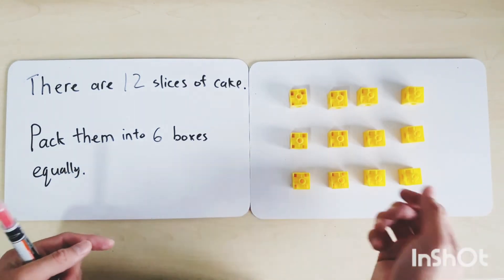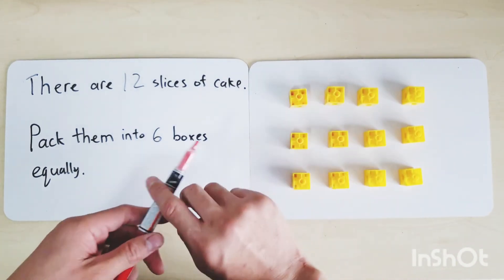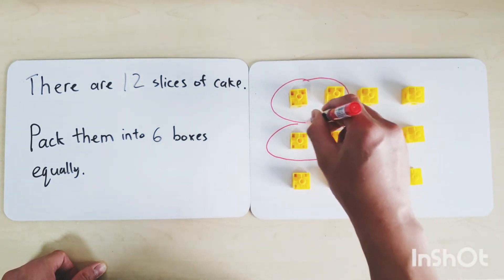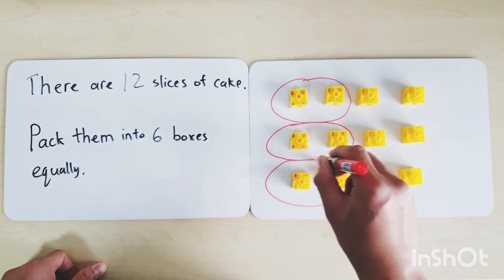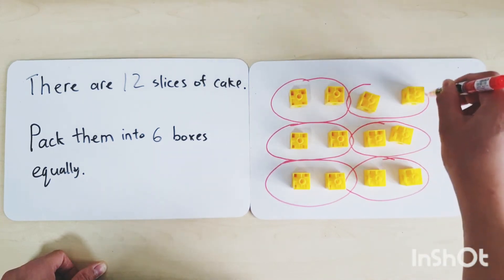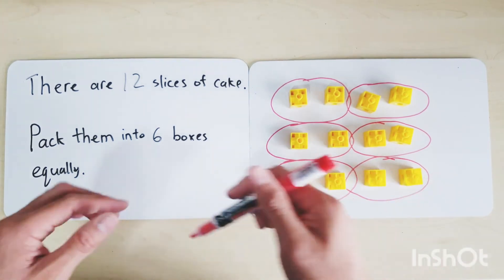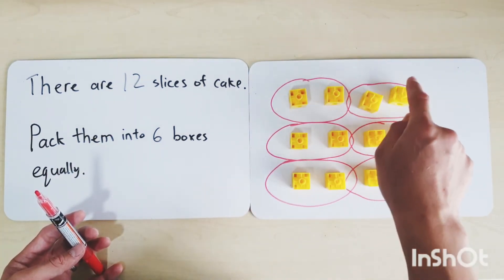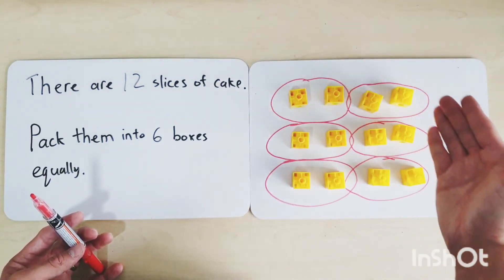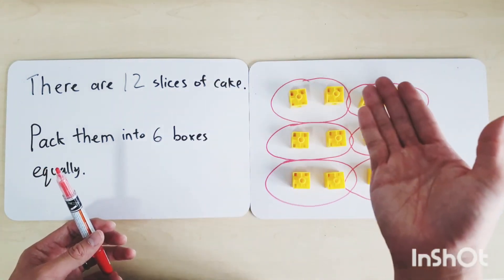What if we group them in pairs of two? Let's try with our marker: one group, two groups, three groups, four groups, five groups, six groups. We can put them equally into six boxes! Let's check if they're equal - each group has 1, 2 items.